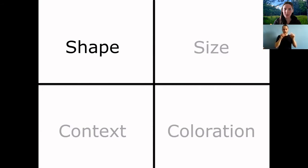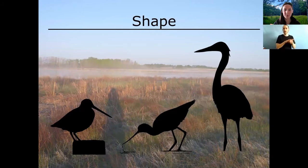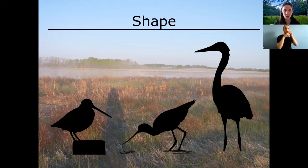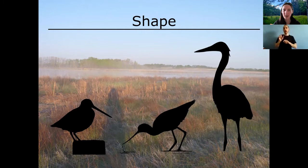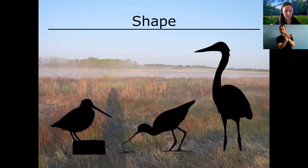We'll start with shape, because sometimes you'll only see the silhouette of a bird or it'll be too far away. Look at the neck, the tail, the beak, and the wings. In the picture shown, these three birds all have pretty long beaks, but the bird on the right has a very long neck, the bird in the middle has a medium neck, and the bird on the left has almost no neck — its head is plopped right onto its shoulders. By looking at neck shape alone, you can tell these are three different species.